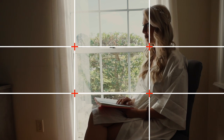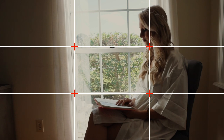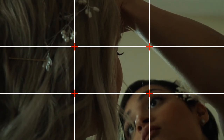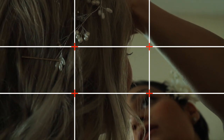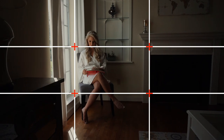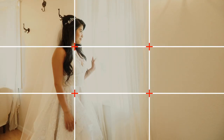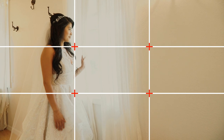You divide your frame into those nine equal squares, and then you place what you want people to look at — what you want your viewers to pay attention to — on one of those cross points. That's pretty much what the rule of thirds is: place your subject, or whatever you want the viewers to look at first, or whatever is important in that frame or image, on one of those points.